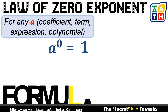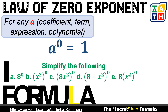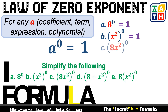This is the law of zero exponent, which states that for any a with exponent zero, it will always be equal to one. Let's simplify five items. A, a to the power of zero — automatically it's one. B, x squared raised to the power of zero — that's one. C, 8x squared but raised to the power of zero — still one. Letter D, even if our expression is a binomial expression but still raised to the power of zero, it will always be equal to one.